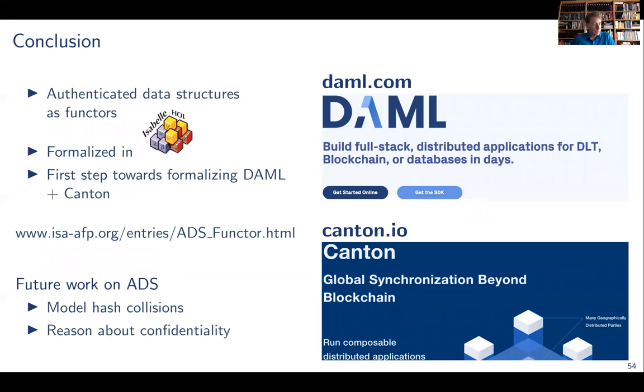In the future, on ADS, we would actually like to get rid of this assumption about injectivity of the hash function. Basically by actually modeling hash collisions in our work. We've got a few ideas how that could work, but haven't finished it yet. And that will also be one step further towards being able to reason about confidentiality. So the modeling that we've chosen works nicely for authentication properties. And that's enough for proving the integrity theorem for Canton. But to reason about confidentiality, we need a more elaborate calculus. But we also have some ideas about that. Thank you.